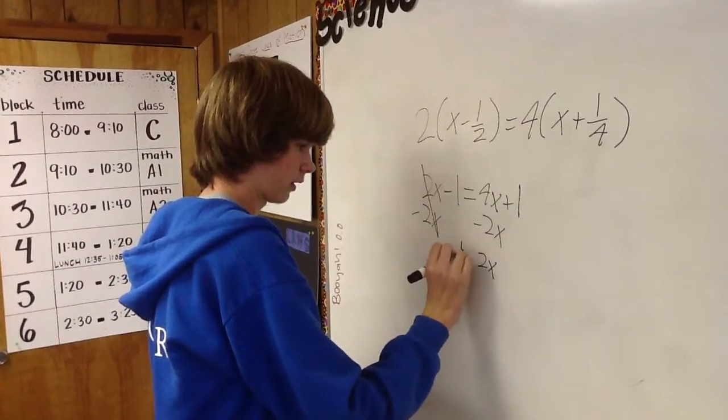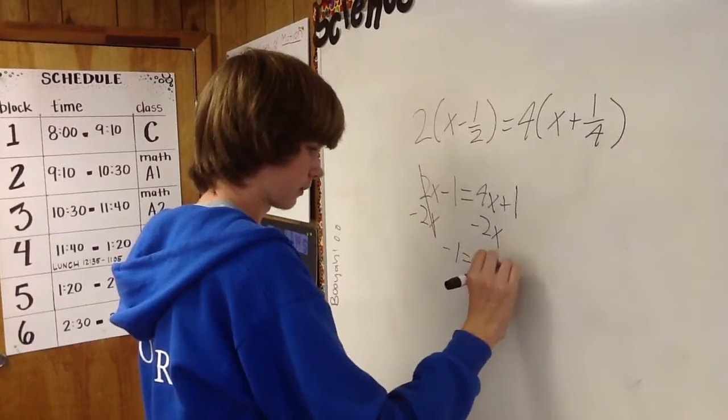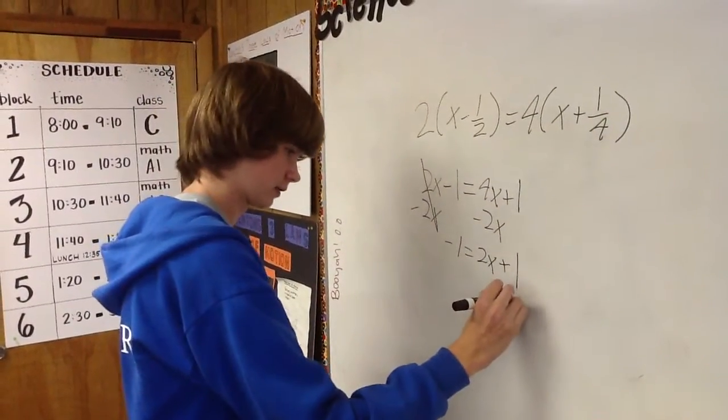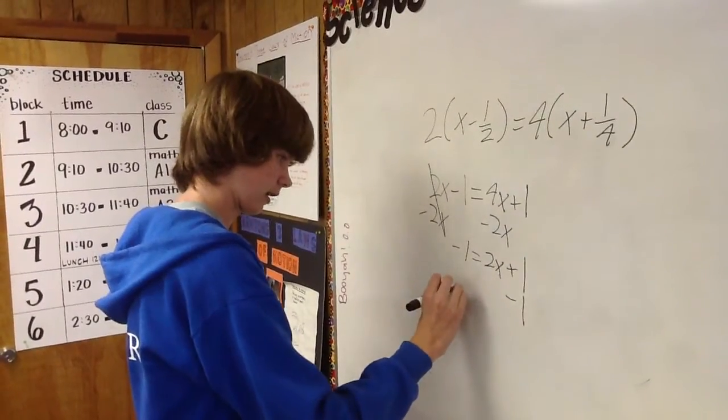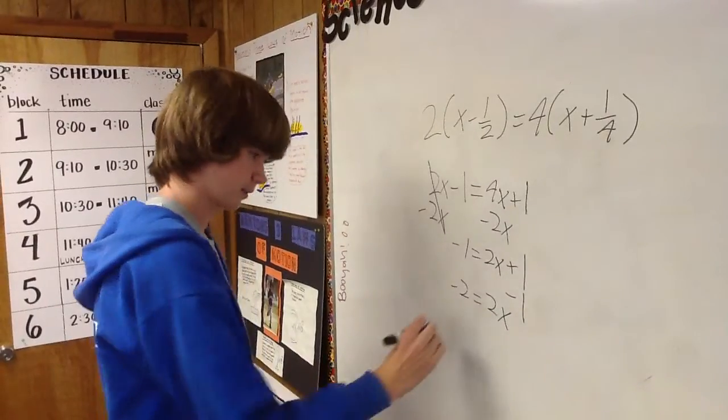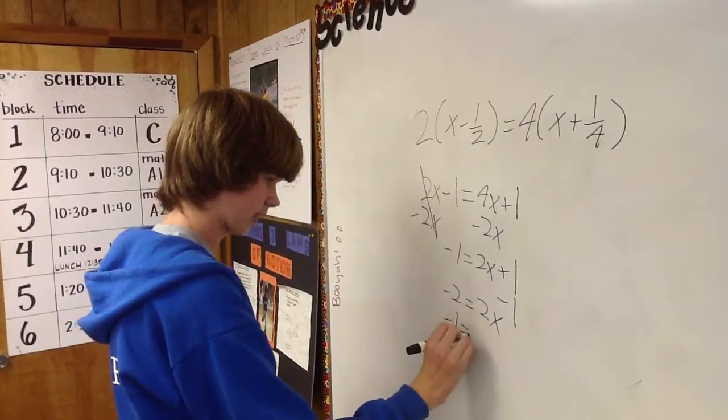So negative 1 equals 2x plus 1. To isolate the variable, I'm going to subtract 1, and get negative 2 equals 2x. Divide by 2, and negative 1 equals x.